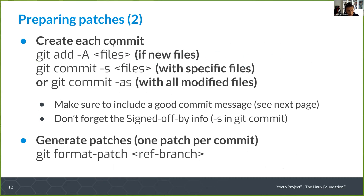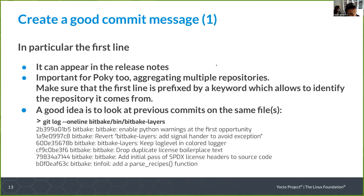Create each commit by using git add for new files, then git commit -s for specific files or all files. Make sure you include a good commit message — that's important. You also need to add the Signed-off-by info, which you get when you use git commit with the -s option. Once you've created your commits, generate your patches with git format-patch, passing the reference branch, to get one patch per commit.